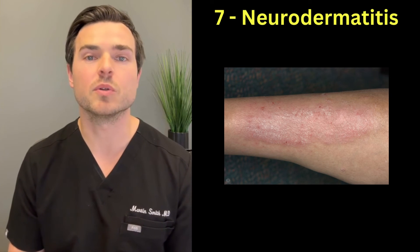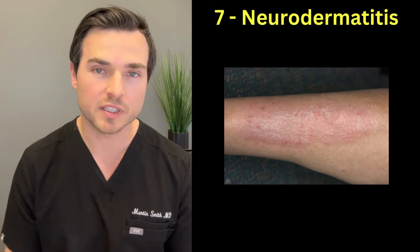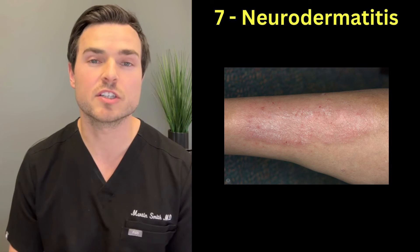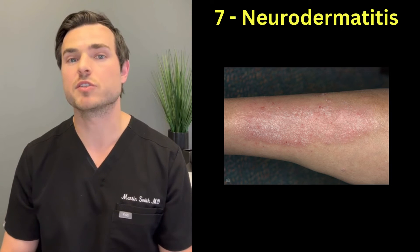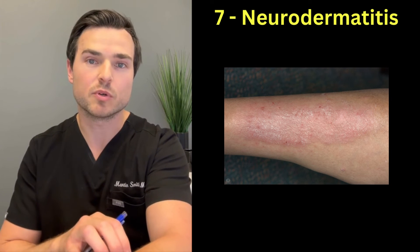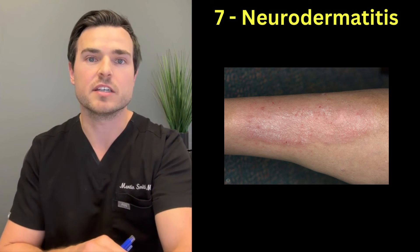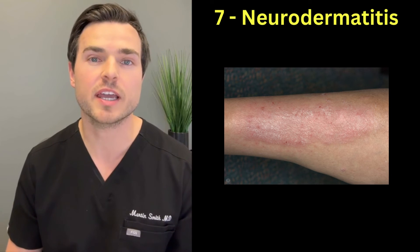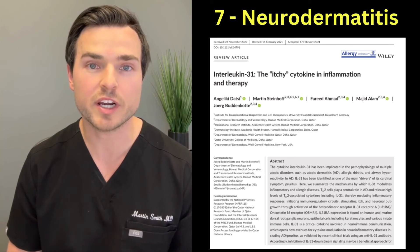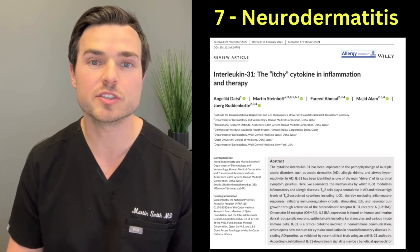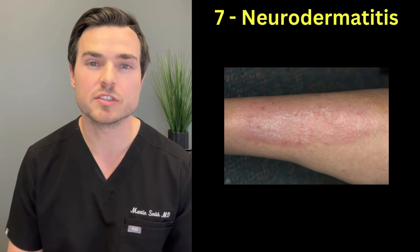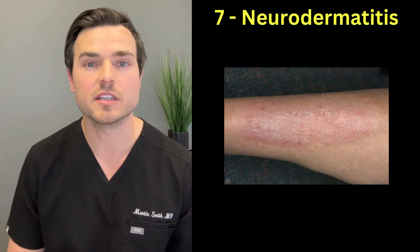At number seven we have neurodermatitis, or lichen simplex. This eczema develops due to increased skin itching caused by the itch-scratch cycle: you scratch an itchy spot, it itches more, you scratch more, the skin thickens and becomes leathery — a long-term problem. When you scratch, your skin releases a chemical called interleukin-31, commonly referred to as itch factor, which causes you to itch more and at different spots than the original itch. It usually affects people between the ages of 30 and 50, slightly more women than men.